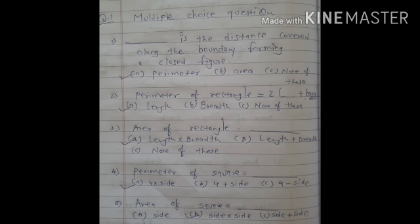Second, perimeter of rectangle equals to 2 in bracket length plus breadth. Okay, rectangle ka formula kya hai? 2 in bracket length plus breadth. Okay, so option A.